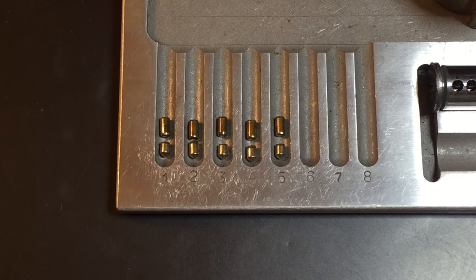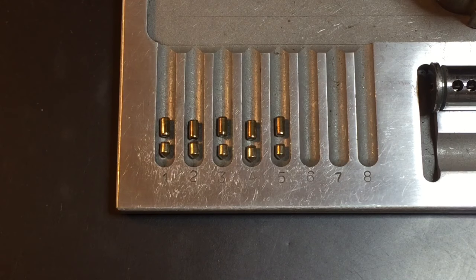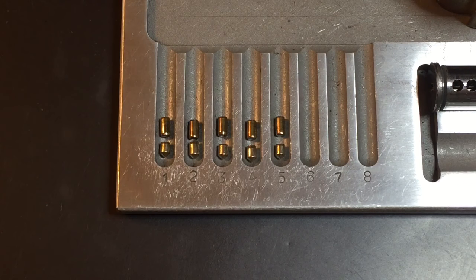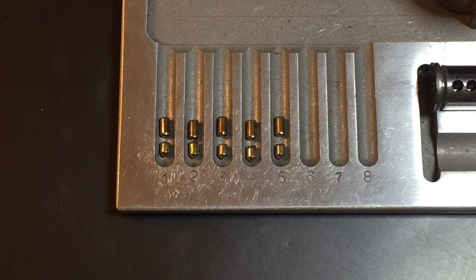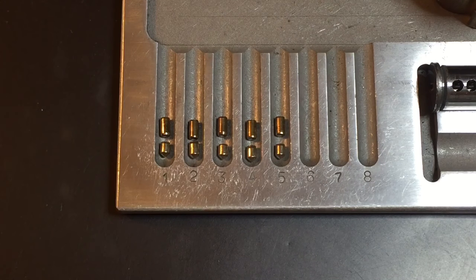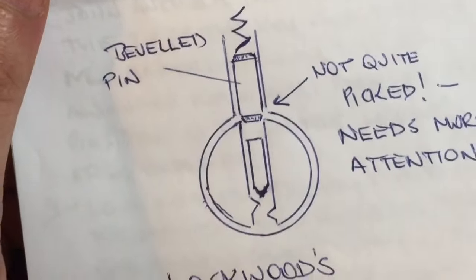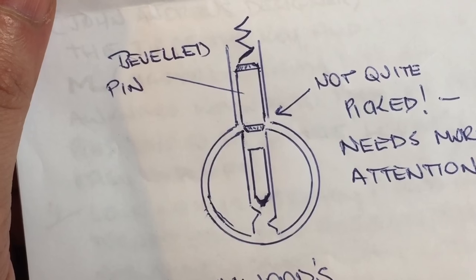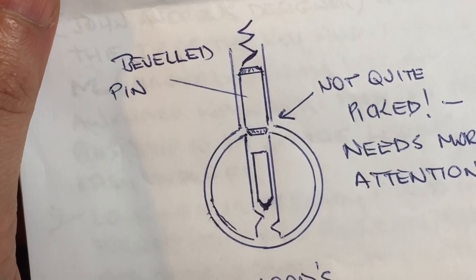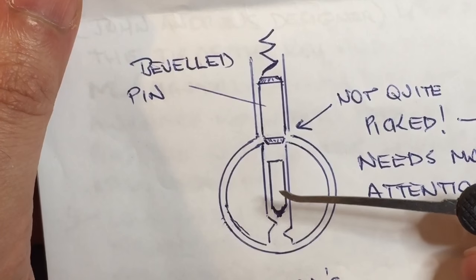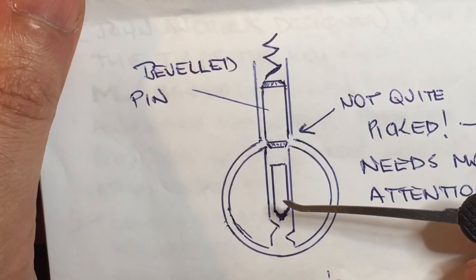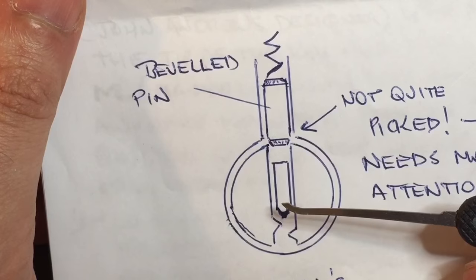Okay I have the lock apart now and right away I see the difference from the 570. We have beveled edges on both the driver pins and the key pins. Now as shown in this diagram, the tapered drivers tend to wedge in the shear line and they'll require a couple extra nudges to set them after you have them at or near the shear line.